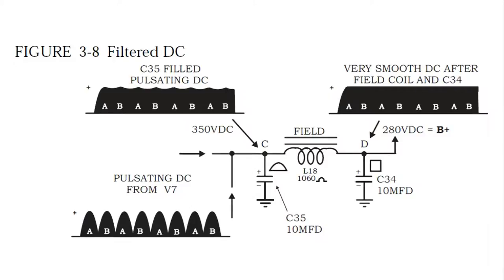And when it gets to point C, where we have a filter capacitor, C35, we can see that we've got some ripples, but it's pretty smooth at that point. But it still would be too noisy to use.